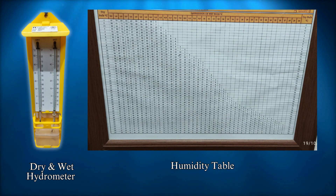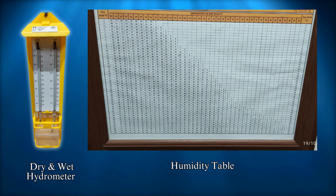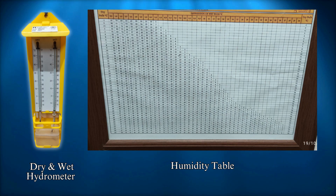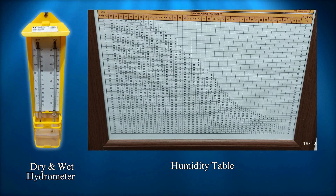Maintain the room temperature at 27 degrees Celsius, and the relative humidity should not be less than 65%. To measure this, we use a dry and wet hydrometer. The relative humidity is determined by finding the difference between the wet and dry temperatures and referring to a graph provided by the manufacturer.